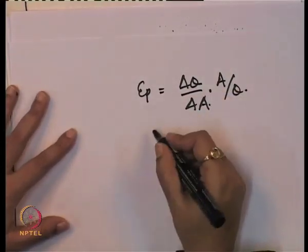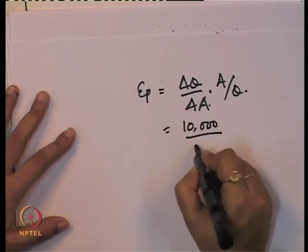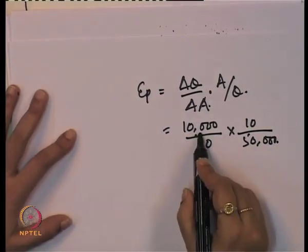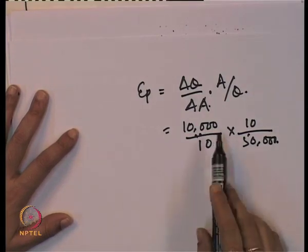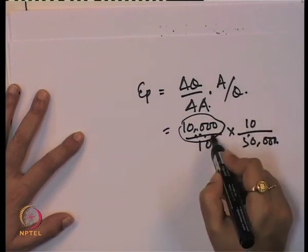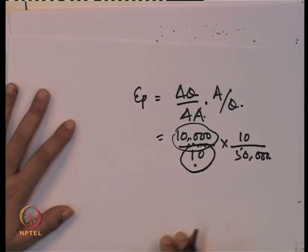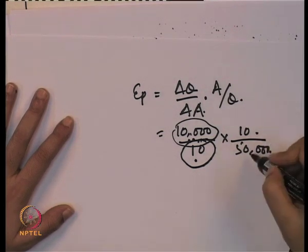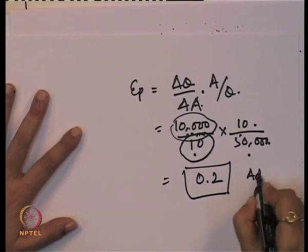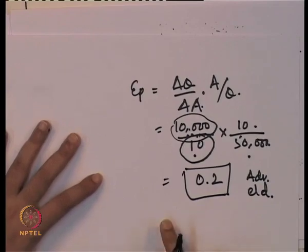ΔQ is 10,000 (sales increase from 50,000 to 60,000), ΔA is 10 million (advertisement expenditure increases from 10 to 20 million), original advertisement expenditure is 10 million, and original sales is 50,000. Computing: 10,000/10 million × 10 million/50,000 = 0.2. So the advertising elasticity of demand is 0.2, meaning a 1 percent increase in advertisement expenditure leads to a 0.2 percent increase in sales. This is a case of relatively inelastic demand, as the change in quantity demanded is less than the change in advertisement expenditure.